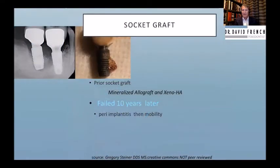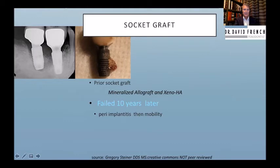Greg Steiner contacted me after reading our peri-implantitis paper — he said our numbers were too low. When I explained we use mature ridges, extracting and waiting for a mature ridge in about 80–90% of cases before placing implants, he said that makes sense. He then sent pictures of a case grafted with mineralized allograft and xenograft combination that eventually failed to peri-implantitis — and histologically, allograft and Bio-Oss particles were still present 10 years later.